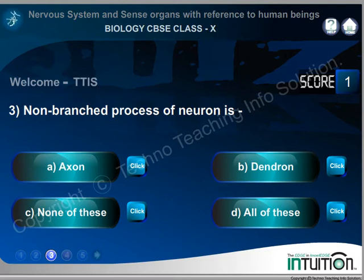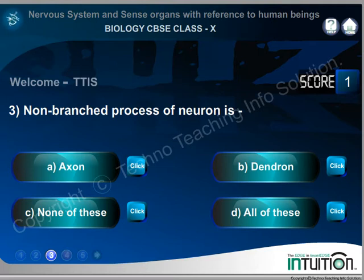Non-branched process of neuron is: A. Axon, B. Dendron, C. None, D. All of these. Right answer: A. Axon.